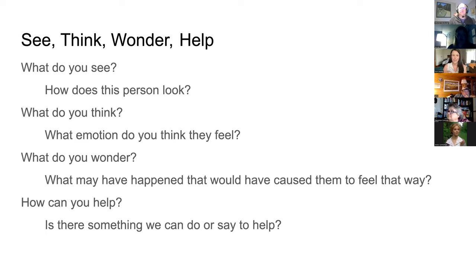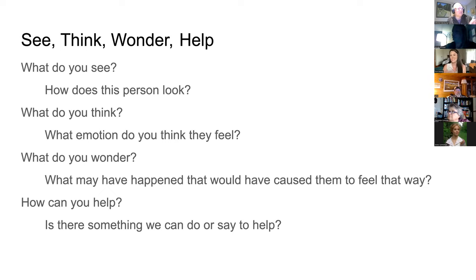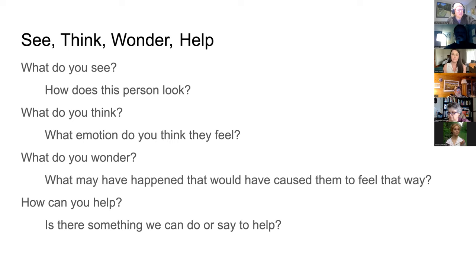I've had to pre-teach this quite a bit to really get kids to figure out what they see — that tends to be the hard one for a lot of kids. 'What do you see' means just the actual facts: I see a girl, I see an ambulance, I see a tree. 'What do you think' is where we get into emotion: I think they are sad, I think they had a fight with their friend. 'What do you wonder' connects to an 'as if' — what could have happened to you that relates to this emotion? And then, how can we help?